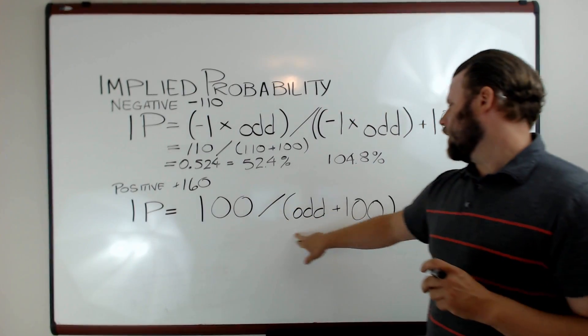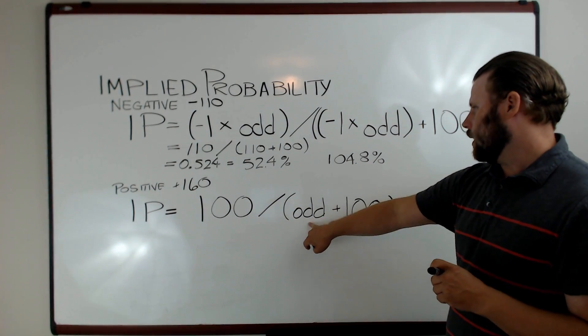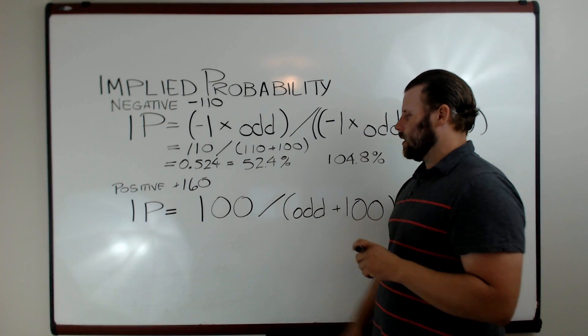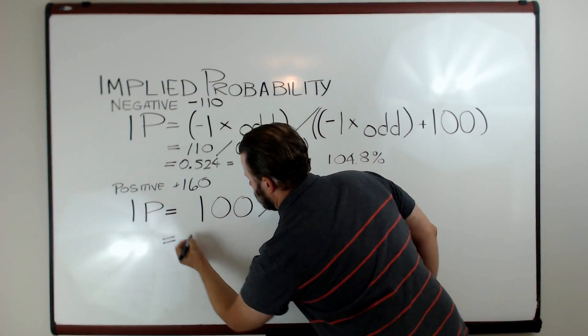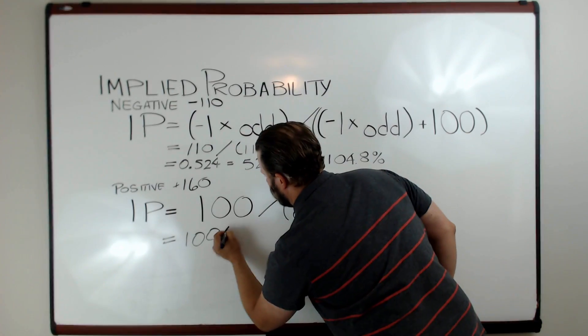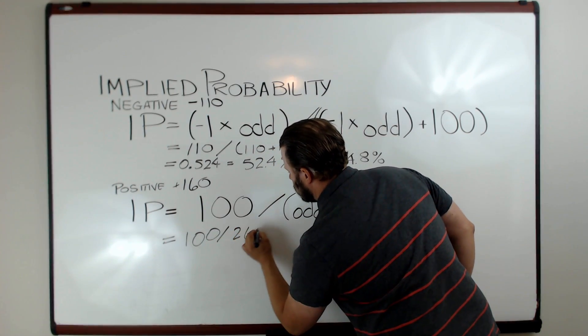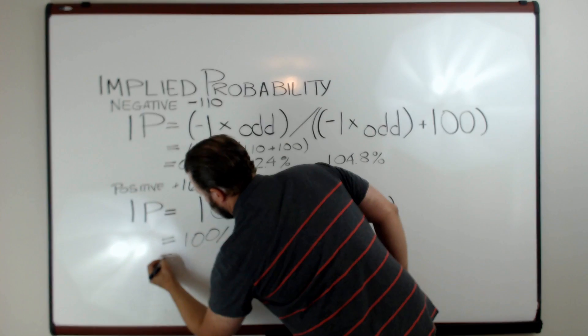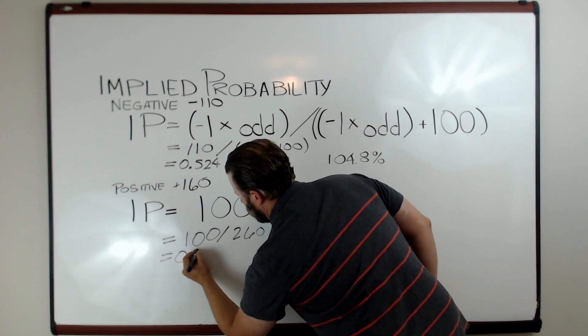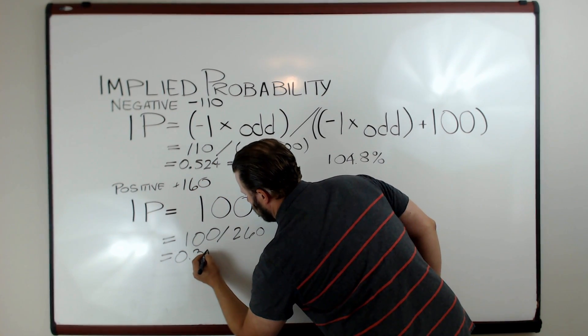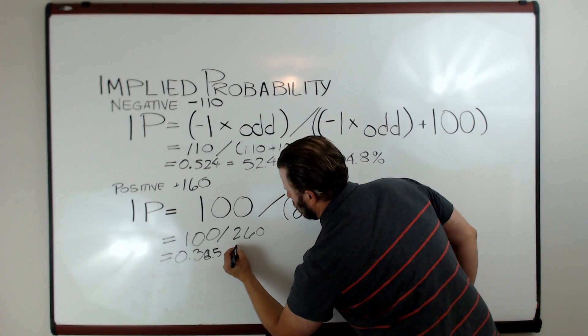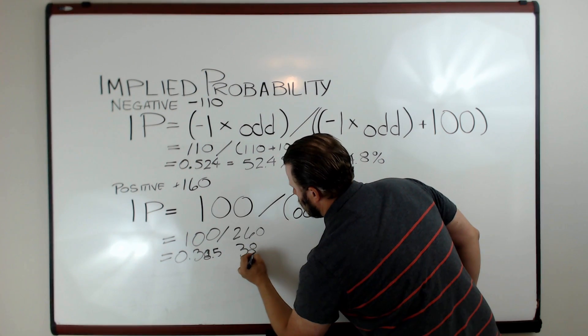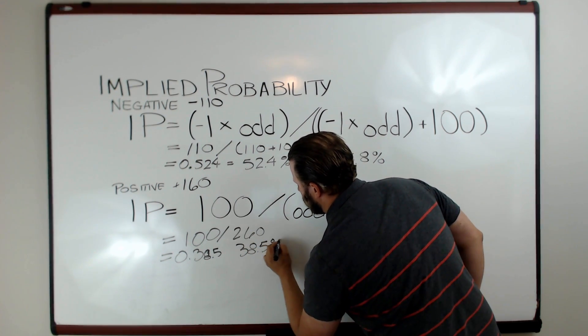The positive equation here is much simpler. 100 divided by 160 plus 100, all over 100, is going to equal 100 over 260, and that's going to give you 0.385, or 38.5 percent likelihood.